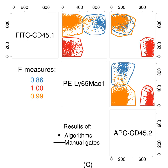These algorithms differ in terms of memory and time complexity, their software requirements, their ability to automatically determine the required number of cell populations, and their sensitivity and specificity. The FlowCAP critical assessment of population identification methods project, with active participation from most academic groups, is providing a way to objectively cross-compare state-of-the-art automated analysis approaches. Other surveys have also compared automated gating tools on several datasets.